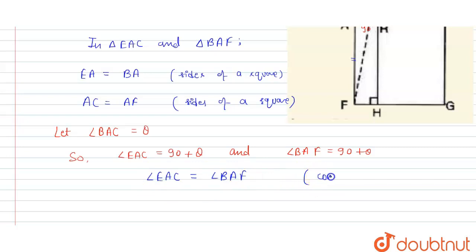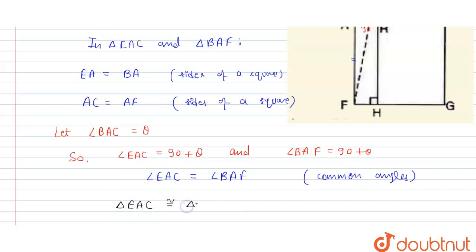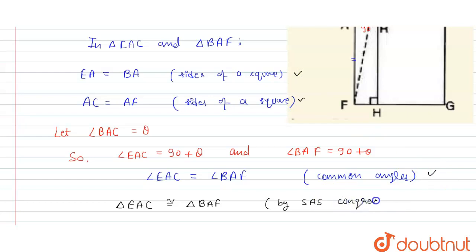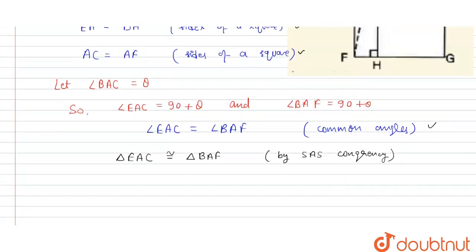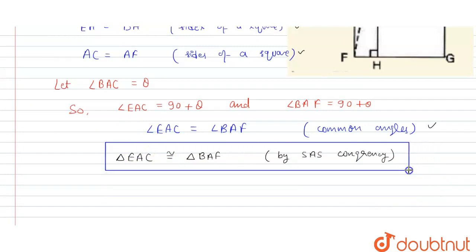So angle EAC is equal to angle BAF. These are the common angles, and we can say that triangle EAC is congruent to triangle BAF by side-angle-side (SAS) congruency — two sides and the included angle — so the condition is proved. This is our final expression for Part 1.